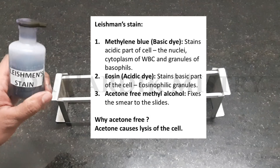Composition and functions of Leishman stain. The composition is: methylene blue, eosin, and acetone-free methyl alcohol. Methylene blue is a basic dye and it stains the acidic parts of the cell — for example, the nuclei, cytoplasm of WBCs, and granules of basophils. Eosin is an acidic dye and stains the basic parts of the cell — for example, eosinophilic granules.